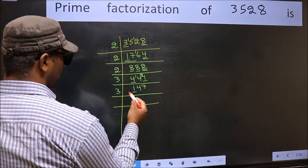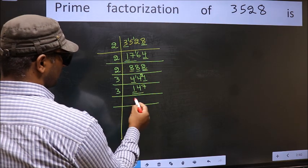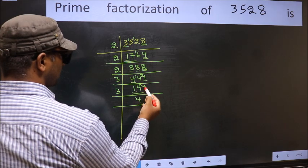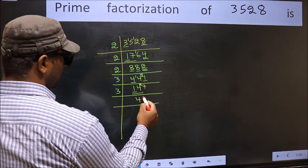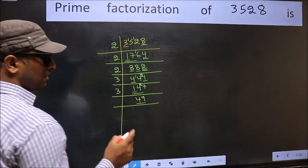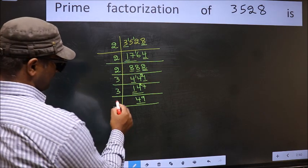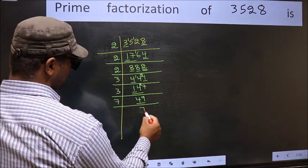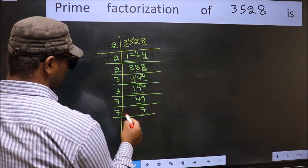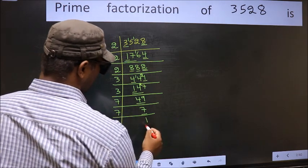Now to check whether 147 is divisible by 3 or not — add the digits: 1 plus 4 plus 7 equals 12, and 12 is divisible by 3. So this number is also divisible by 3. So take 3 here. First number 1 is smaller than 3, so take 2 numbers: 14. A number close to 14 in the 3 table is 3, 4's 12. 14 minus 12 is 2, 2 carried forward 27. We get 27 in the 3 table: 3, 9's 27. Now we have 49. Always remember 7 into 7 is 49. Now we have 7, which is a prime number. So 7, 1's 7. We got 1.